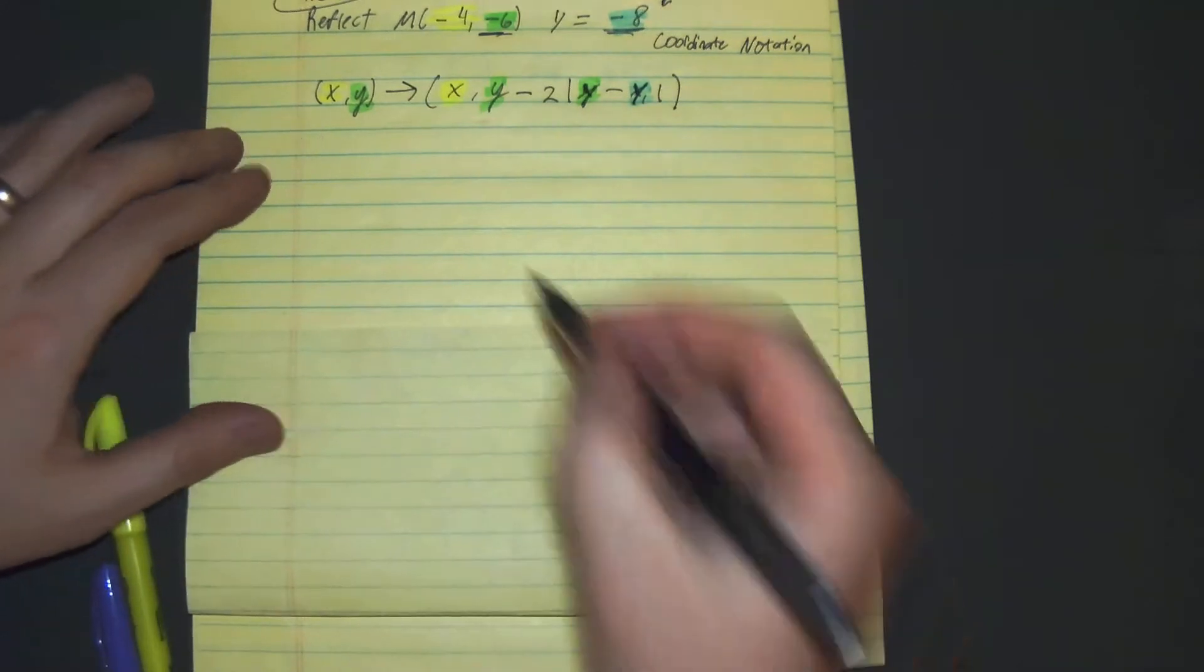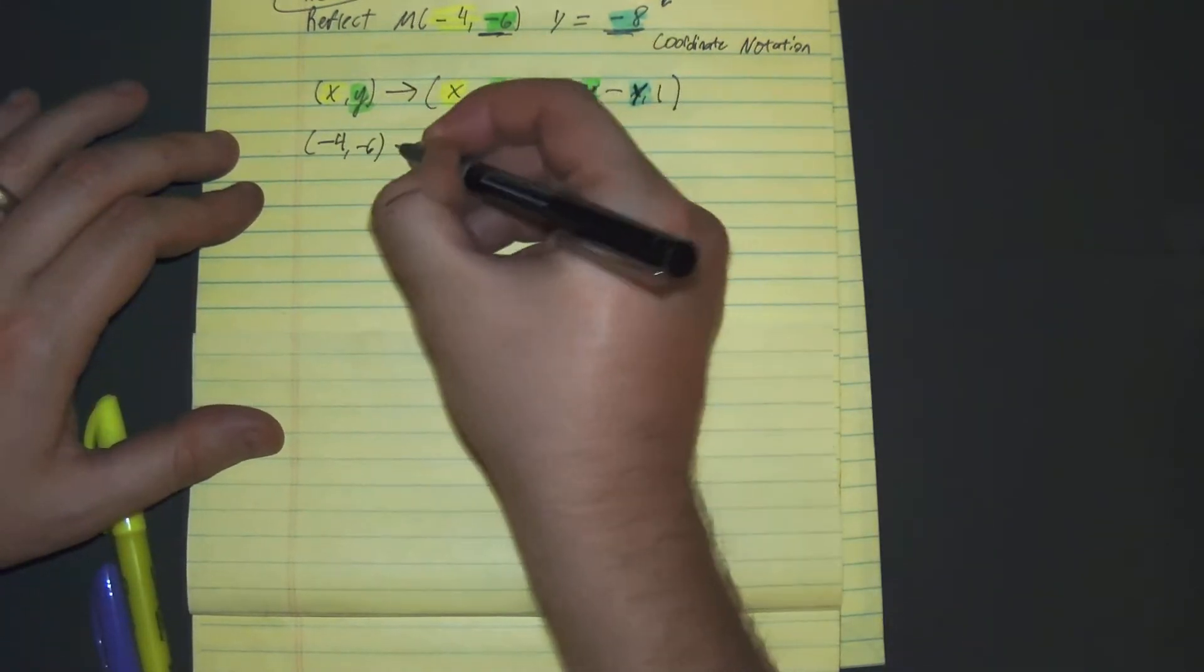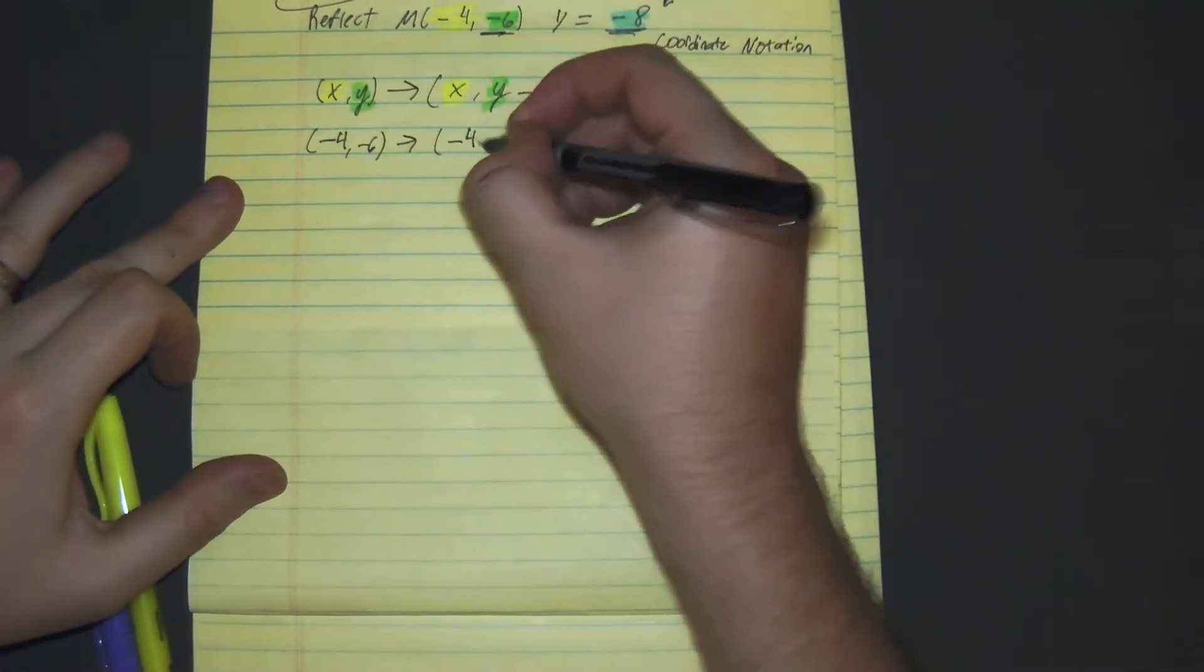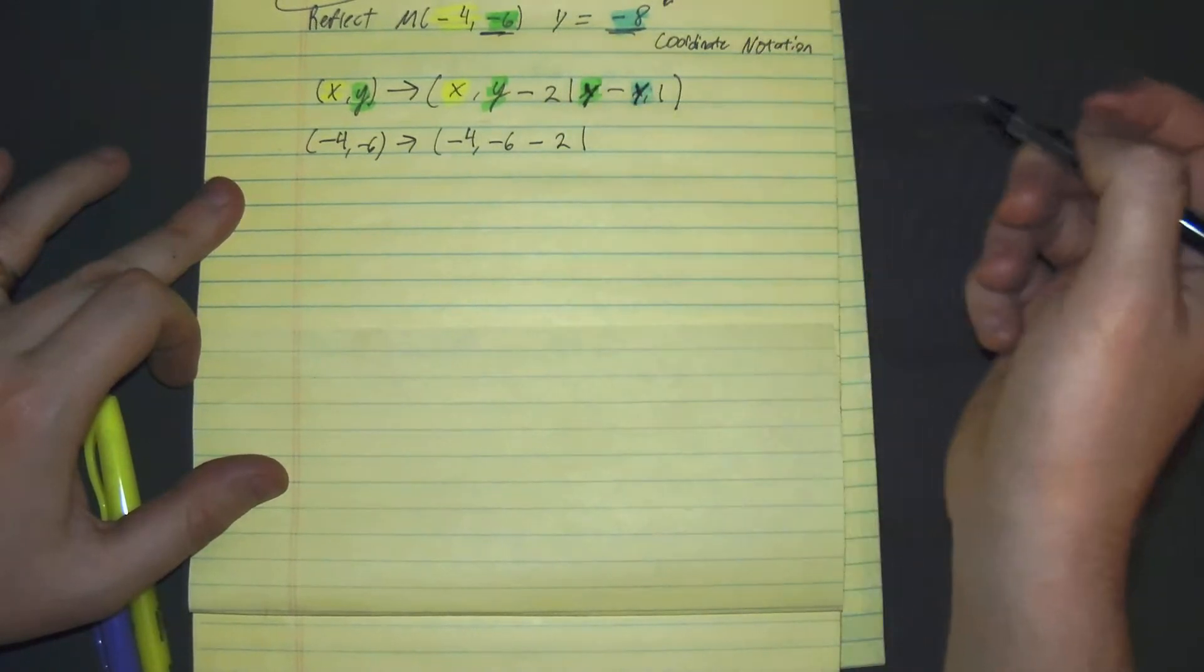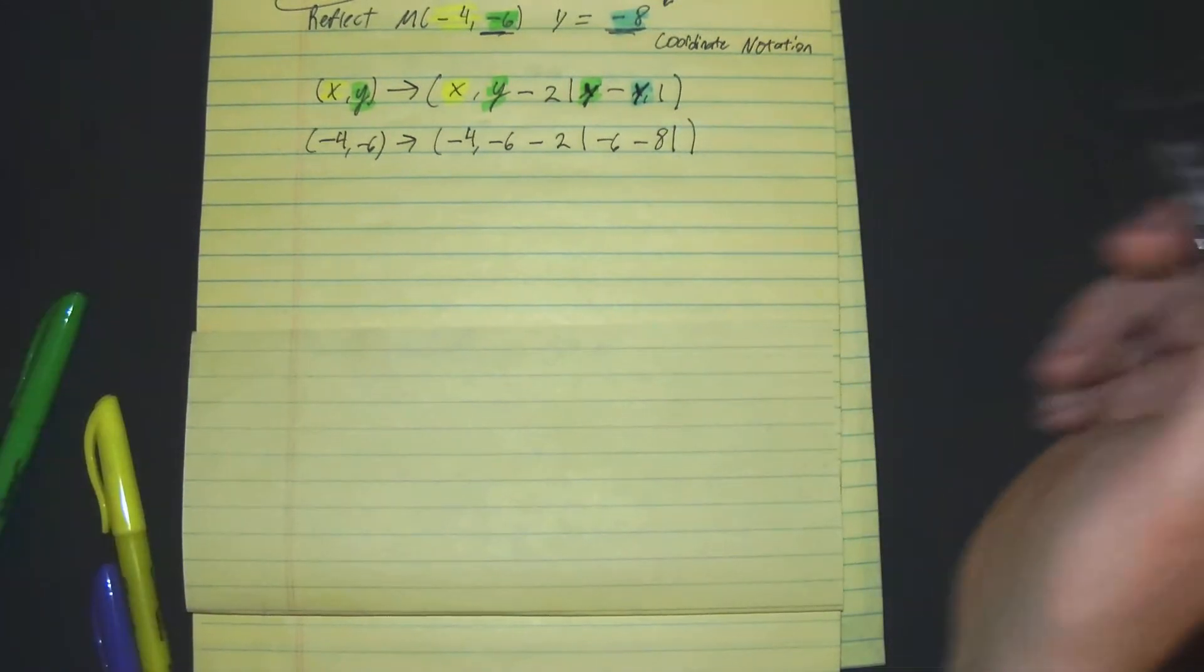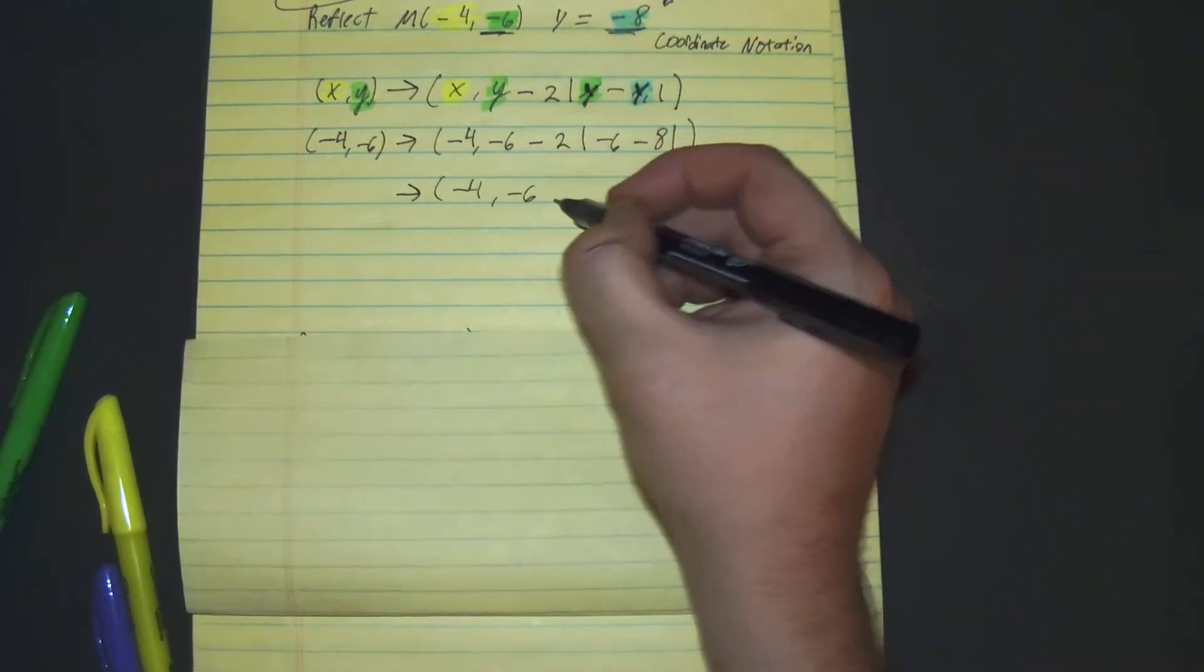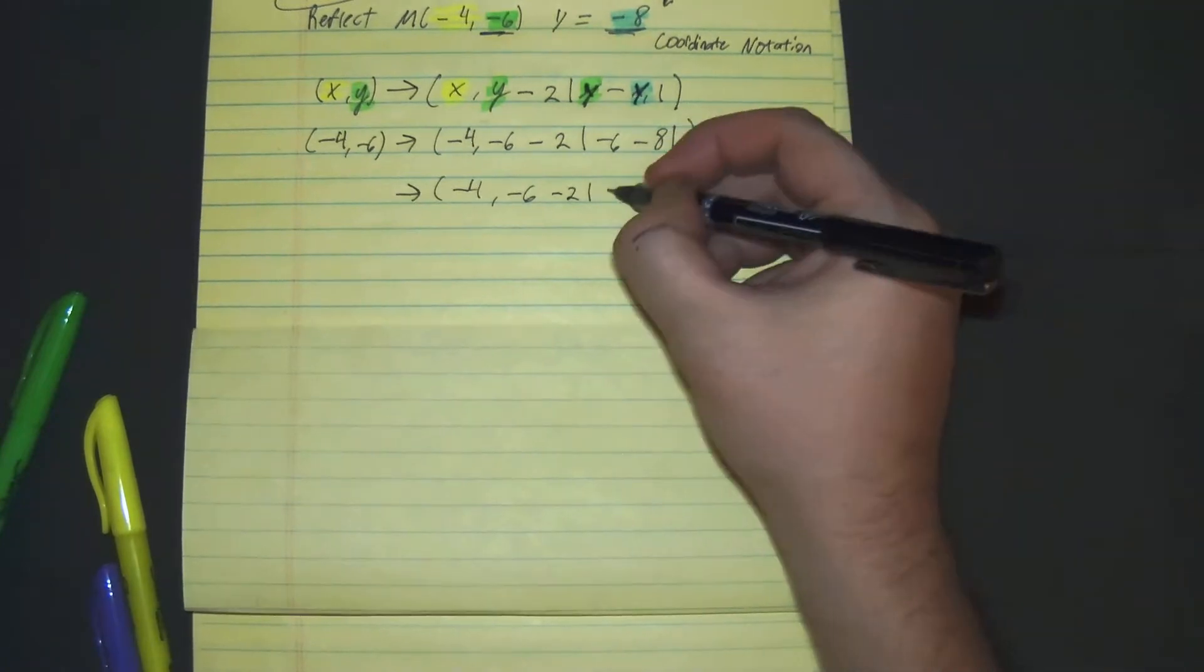Alright, let's get cracking with this. We don't need to really do anything with this part because it's just showing what our pre-image is, which is (-4, -6). Then it becomes negative 4 stays the same, negative 6 minus 2 times the absolute value of negative 6 minus negative 8. We get (-4, -6) minus 2 times... So what we get here is negative 14.